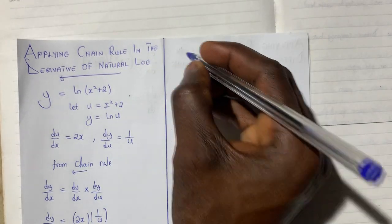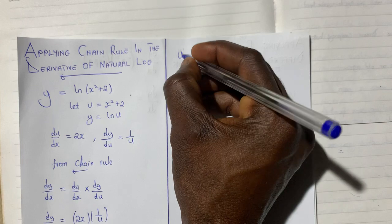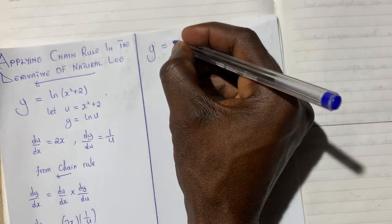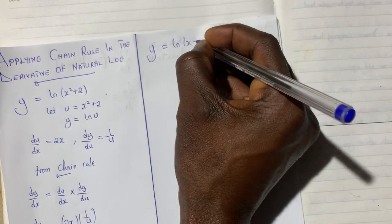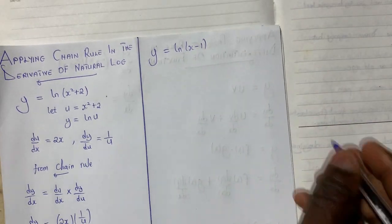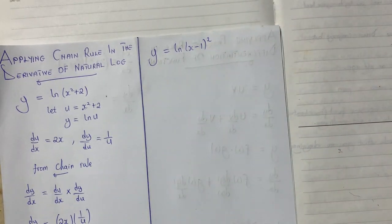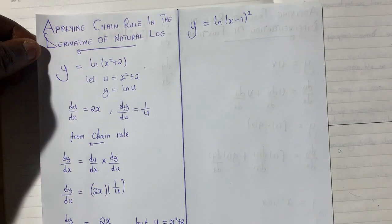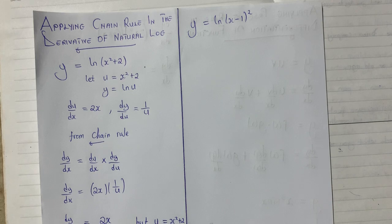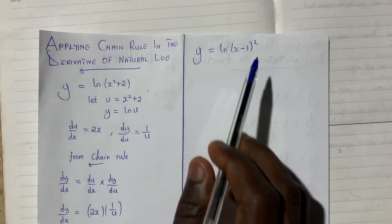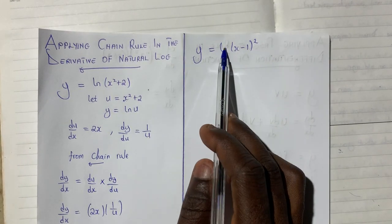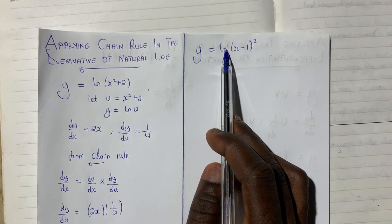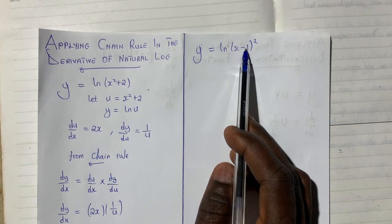For example, we may be given an equation such as y giving us something like ln of x minus 1 squared. Now, those of us that are familiar with indices and logarithms, we know that if we have something like this, it is possible that we can bring the 2 here to multiply the ln and have 2 ln x minus 1.